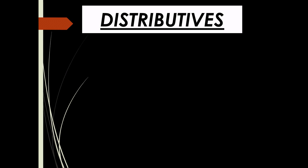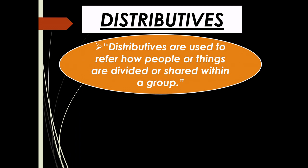Now let's see the next determiner, which is distributives. Distributives are used to refer to how people or things are divided or shared within a group. We can also say that distributive determiners are words that give information about the noun in a sentence. They may refer to a group or every individual in the group.